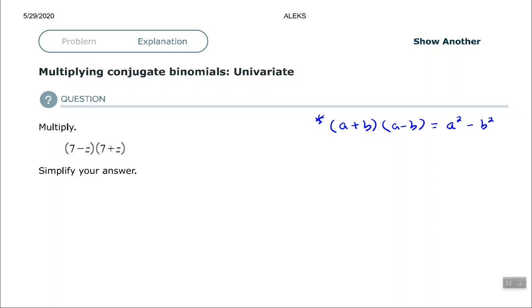All right. So this problem here, we have (7 - z) times (7 + z). So I have the same terms but opposite signs. So it doesn't matter if the plus is in the first parentheses or the second parentheses. You just want to make sure you have opposite signs with the same terms. Then you can use this rule here.